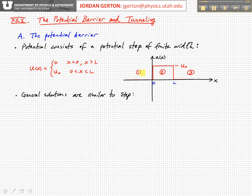Region 1 is at x less than 0, and that corresponds to when the potential is 0. Region 2 is where the barrier is, so that's where the potential is U₀. And region 3 is where the potential goes back to 0 again, when x is greater than L.